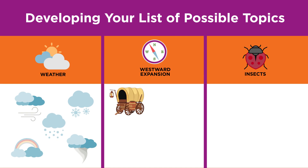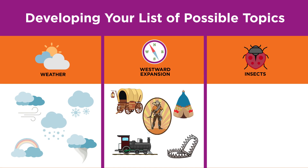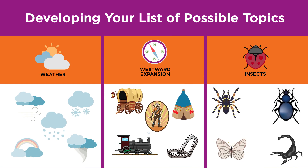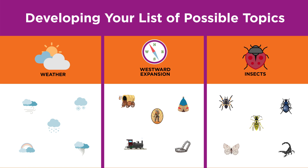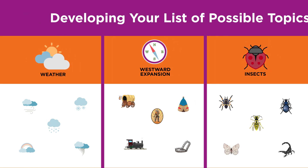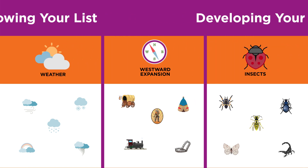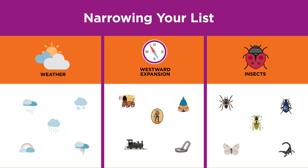When you have a main topic or two in mind, brainstorm and write down all of the possible subtopics that pop into your head. Subtopics are the small ideas that connect to the big ideas.